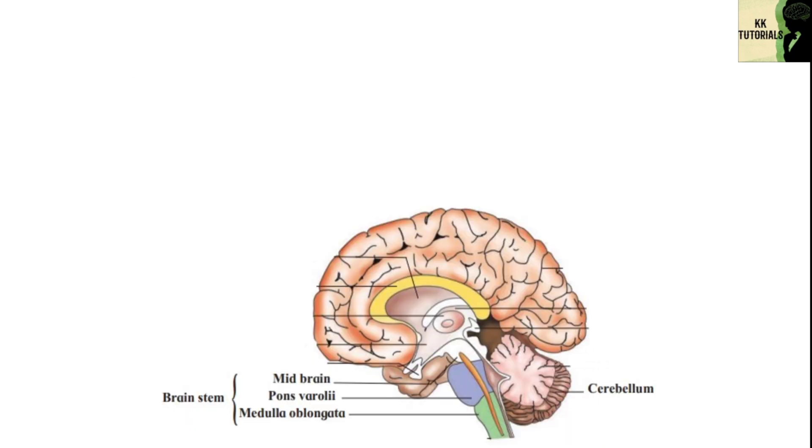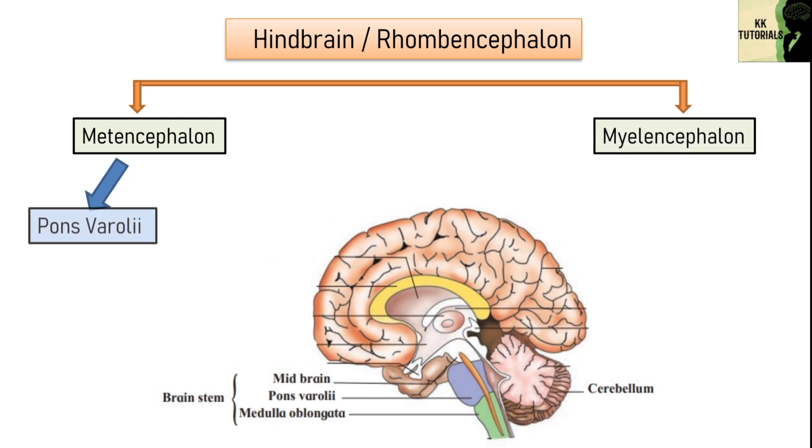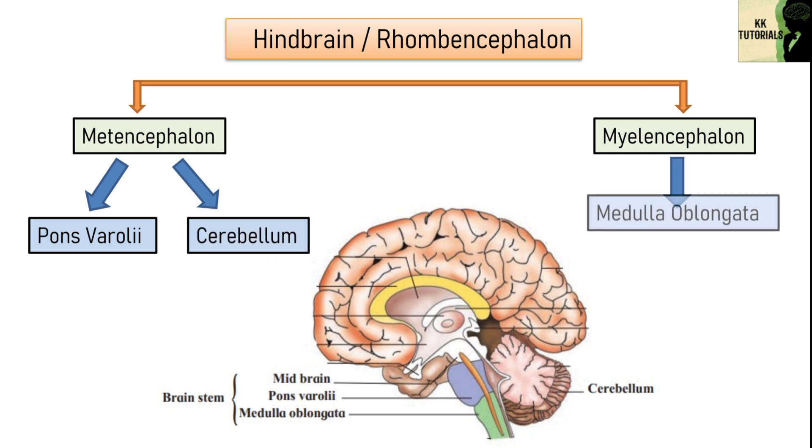Third part is hindbrain, also called rhombencephalon. It consists of two parts, metencephalon and myelencephalon. Metencephalon consists of pons varoli and cerebellum, whereas myelencephalon consists of medulla oblongata. The pons varoli appears as a rounded bulge on the underside of brain stem. Medulla oblongata is the posterior chronical part of the brain.